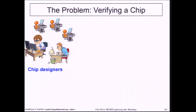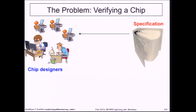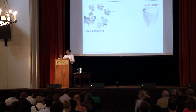Let's say we have a group of chip designers who are trying to produce the next biggest innovation in hardware. Typically they are given a specification and what they are going to do is try to come up with a chip that meets this specification. For example, they might be trying to design a WiFi chip that goes in your mobile phone, and the specification might say something about the power consumption of this chip.